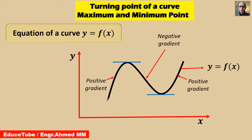If I give the points names as P, Q, R and S, then for this part the gradient or rate of change changes from positive between P and Q, to negative between Q and R, and then again positive between R and S.